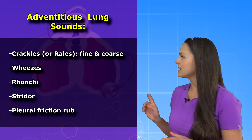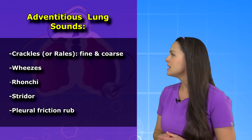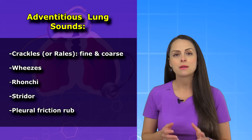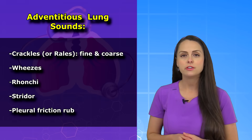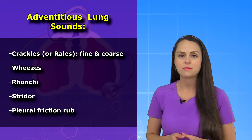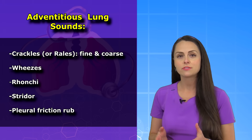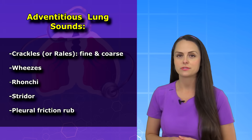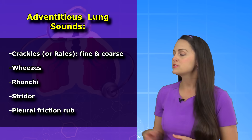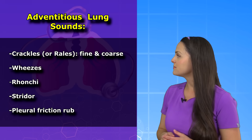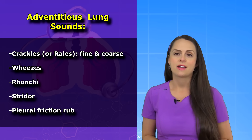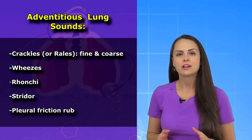The first type is known as crackles. These are also sometimes called rales, and you can further divide them into fine crackles and coarse crackles. There's also wheezes, ronchi, stridor, and pleural friction rub.